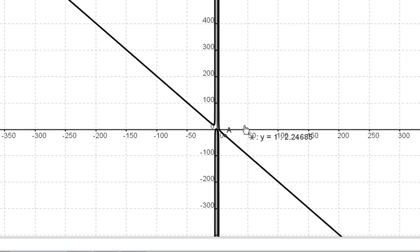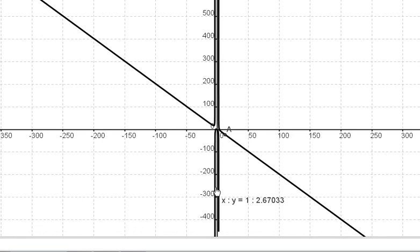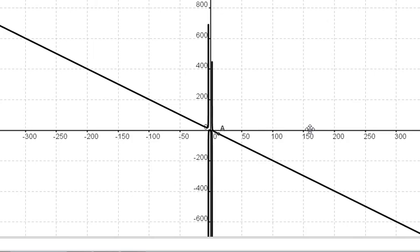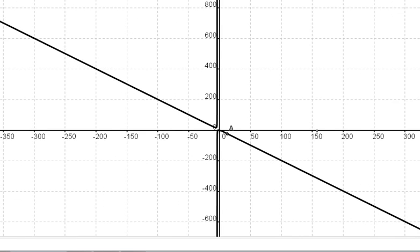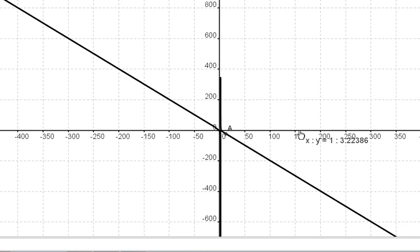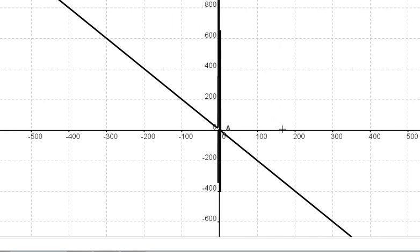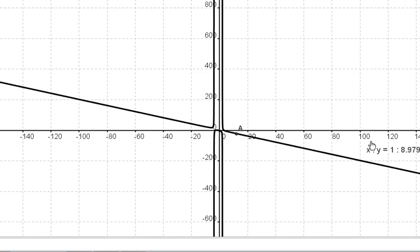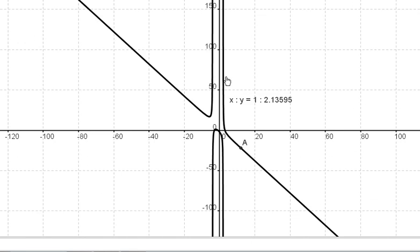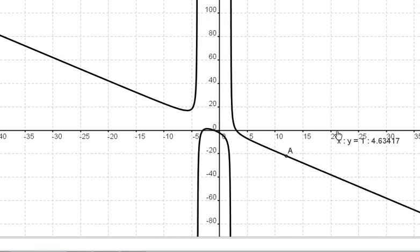And look what happens. It looks like our function is becoming a negatively sloped straight line. And we zoom really far out. That straight line is the slant asymptote.